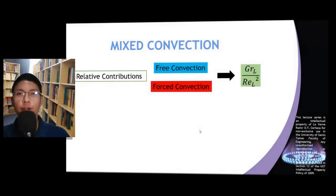We have pointed out earlier that the relative contributions of free and forced convections in the total rate of convective heat transfer is determined by the ratio of the Grashof number and the square of the Reynolds number.